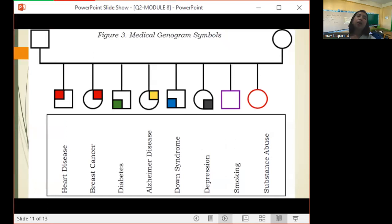We also have this one. For heart disease, we have a square, then in the upper left corner of the square, we have another small square there and a red color inside. That is for heart disease. If mga kamag-anak ninyo is suffering from that kind of diseases, pwede ninyong gamitin yung mga symbols na yan.